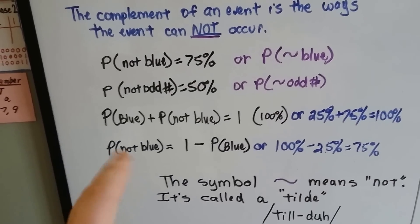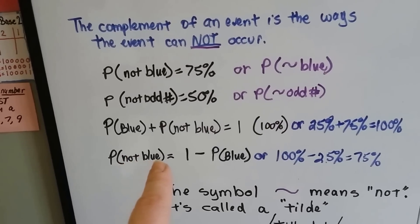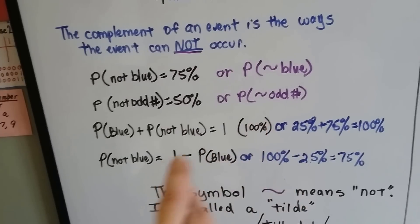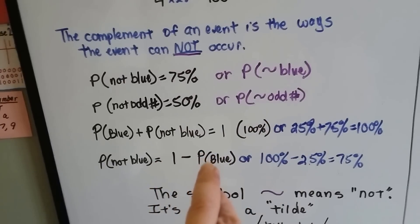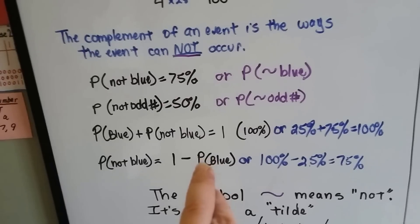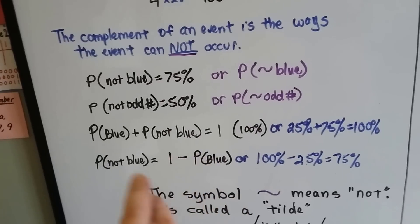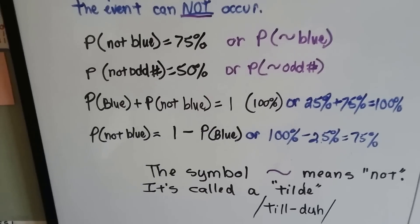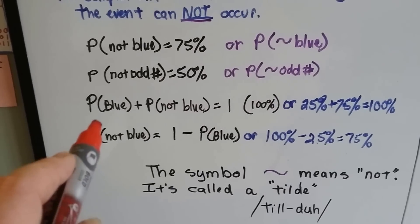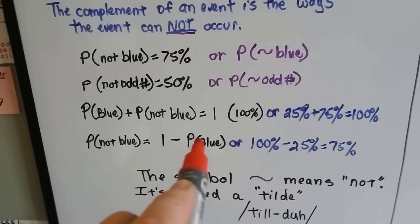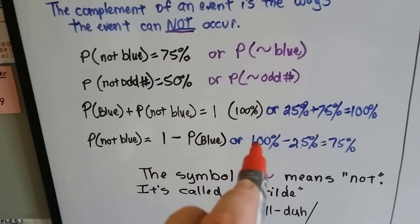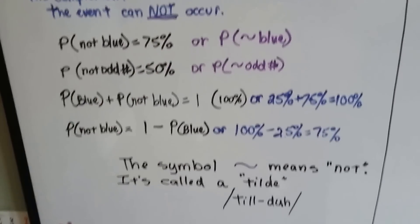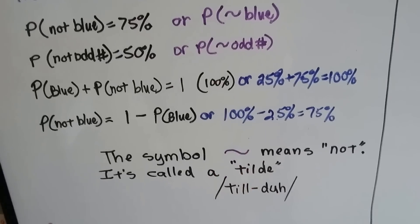Now, you take the probability of it not being blue, and it equals this 1, sort of like the 100%. If you take away the probability of it being blue from the 1, that's how you're going to get the not blue. I hope I am making this clear. To get the not blue, you subtract the possibility of it being blue from the 100%, and you'll get the 75%. And then just remember that this means not in math.